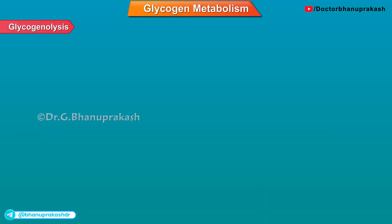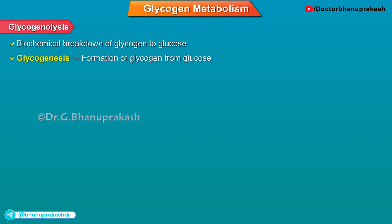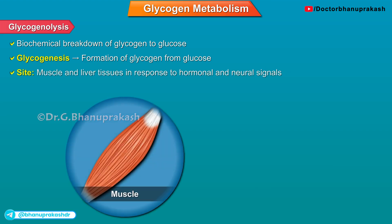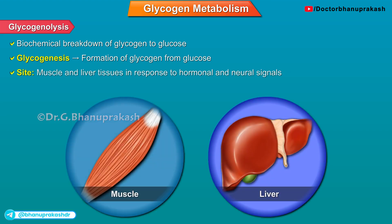Glycogenolysis is the biochemical breakdown of glycogen to glucose, whereas glycogenesis is the opposite — the formation of glycogen from glucose. Glycogenolysis takes place in the cells of muscle and liver tissues in response to hormonal and neural signals.